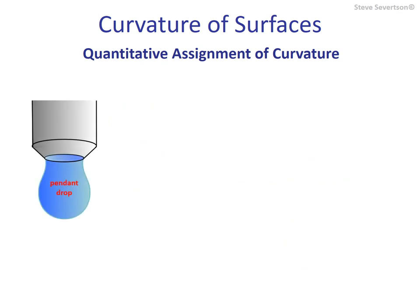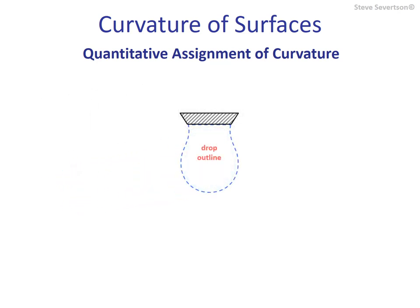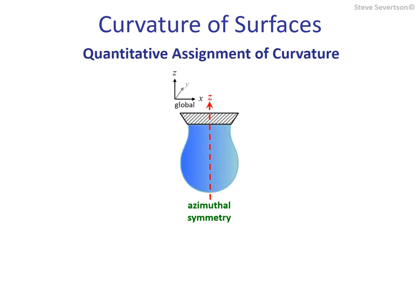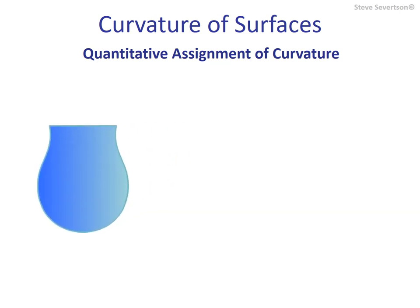In capillary studies, we are often examining shapes that possess a centrally located rotational axis of symmetry. Such shapes can be represented with two-dimensional images, such as the shadow images collected in optical sessile and pendant drop experiments, with the understanding that the entire shape is obtained through its rotation about the axis of symmetry, typically designated as the z-axis. Due to the symmetry, analysis of half the drop provides curvature values over the entire surface.